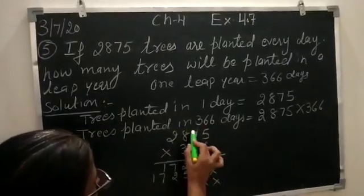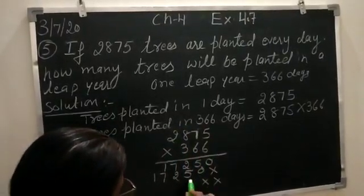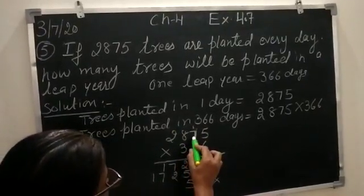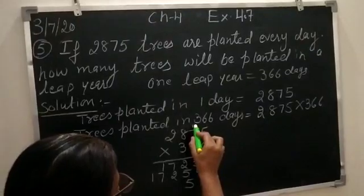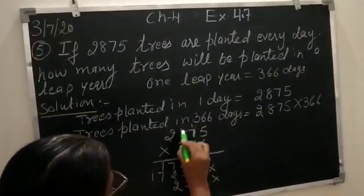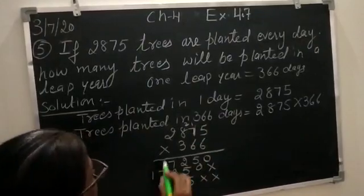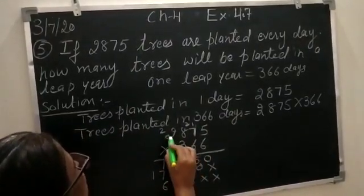3 fives are 15, 1 carry here. 3 sevens are 21, plus 1, 22, 2 carry here. 3 eights are 24, plus 2, 26, 2 carry here. 3 twos are 6, plus 2, 8.